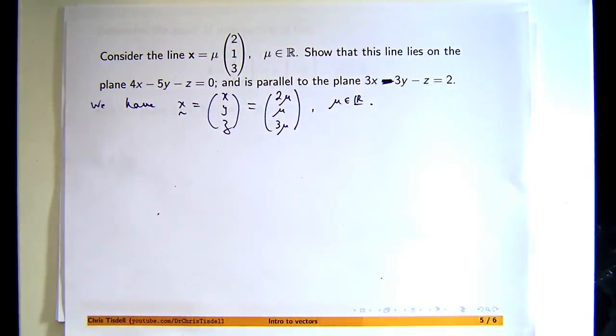So what it says is that this line, which is parallel to the vector (2, 1, 3) and passes through the origin, is basically x equals 2μ, y equals μ, and z equals 3μ.